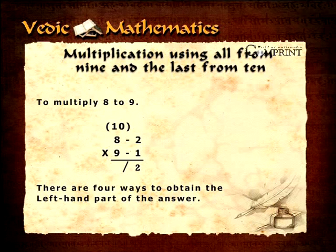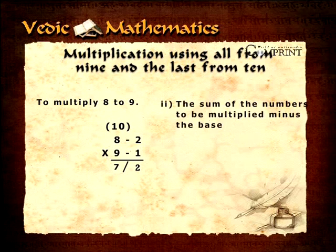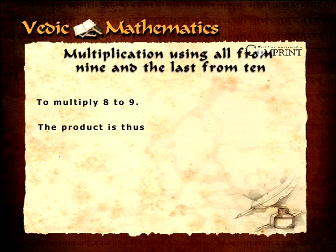There are four ways to obtain the left-hand part of the answer. First, the base 10 minus both complements: 10 minus 2 minus 1 equals 7. Second, the sum of the numbers to be multiplied minus the base: 8 plus 9 minus 10 equals 7. Third, cross subtract 8 minus 1 equals 7, and last, cross subtract 9 minus 2 which also equals 7. The product is thus 8 multiplied by 9 equals 72.